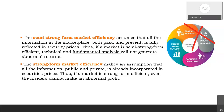Moving on to the strong form of market efficiency: this is the extreme form of market efficiency and assumes that all information — public, private, or even inside information — is already incorporated in security prices. Thus, if a market is strong form efficient, even insiders cannot make abnormal profits. Insiders are people within a company who have information prior to its public announcement. However, several studies were conducted that proved insiders could get abnormal returns, which contradicts the strong form of efficiency.